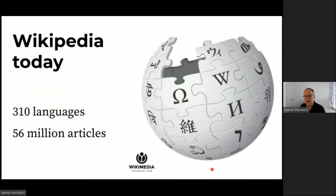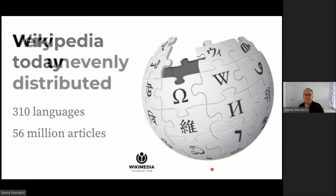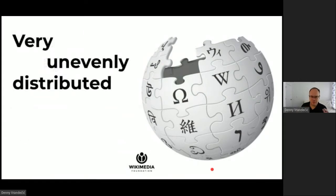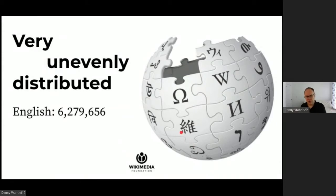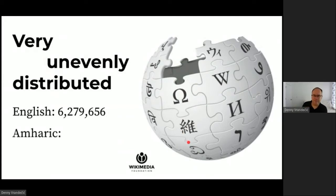That doesn't sound too bad, right? But the knowledge we offer is very unevenly distributed. In English we have more than six million articles, which is roughly comprehensive, but in Amharic — a language of 20 million native speakers — fewer than 15,000.